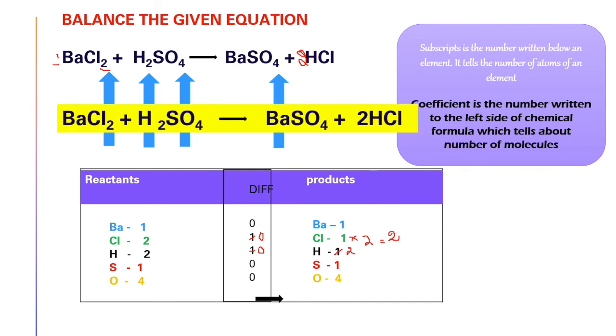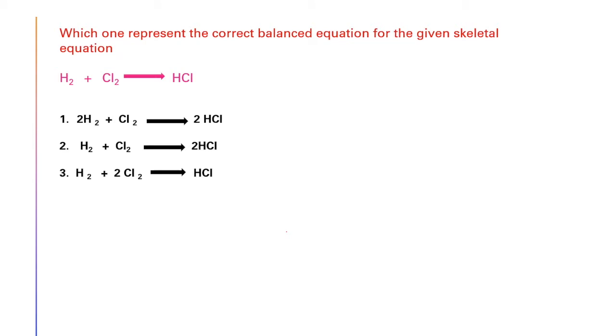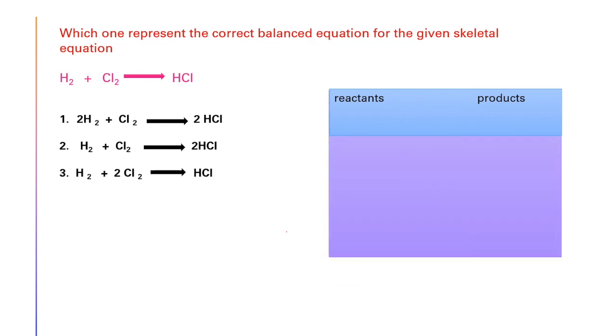Now let us solve the reaction which will represent the correct balanced equation for the given skeletal equation: H2 plus Cl2 gives HCl. First let us see reactants and products. Then after that we will write the number of atoms of elements, and for the products also let us write. Then you can see the difference. For hydrogen 2 minus 1 equals 1, then chlorine also 1.